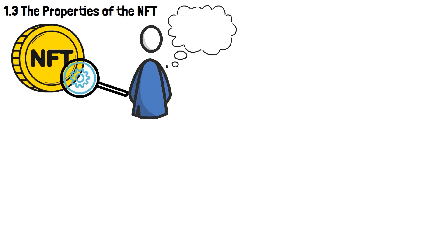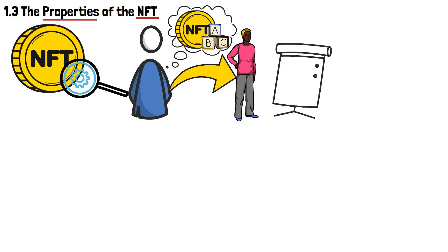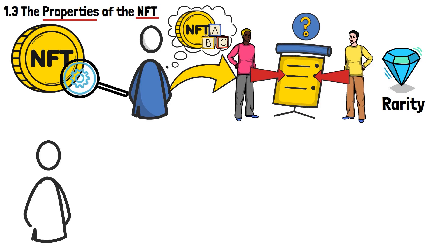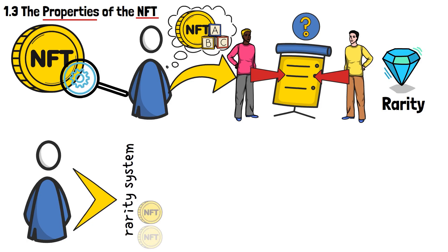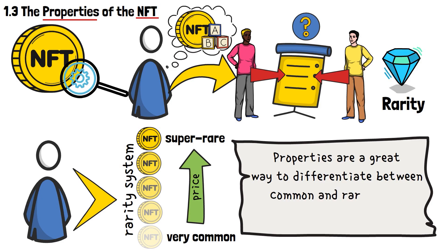Next, we have the properties of the actual NFT, which is mostly important if you're creating a collection rather than a single token. Properties are like the description of the artwork — for a character drawing, properties could be hair color, what they're wearing, their jewelry, skin color, and so on. In a collection, all of these properties are likely different for each unit. This mainly relates to rarity: most NFT collections have a rarity system where some tokens are very common while others are super rare, similar to collectible trading cards. This will eventually dictate the price of each piece, and properties are a great way to differentiate between common and rare NFTs within a collection.